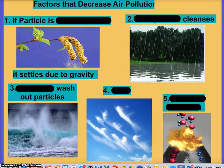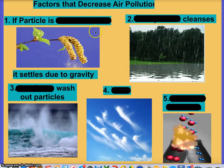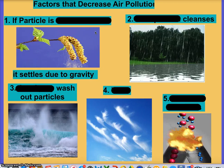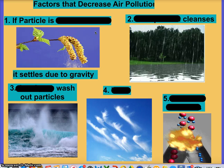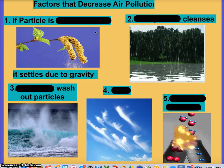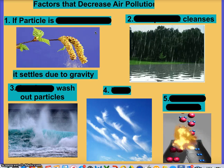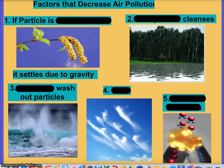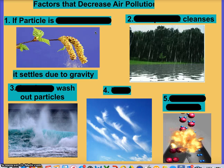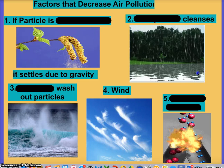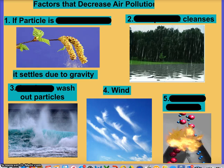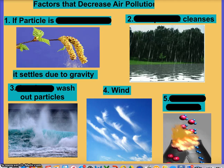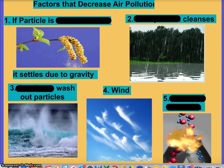Factors that decrease air pollution — in other words, how do we reduce these chemicals in the atmosphere that are at harmful levels? Wind helps separate or move pollutants to another area, taking them away from excessive concentration in a specific area.